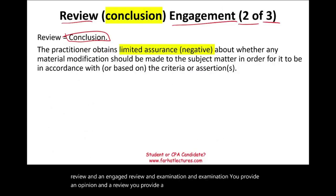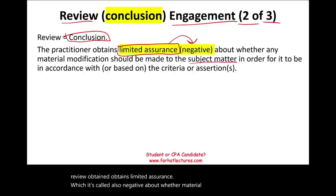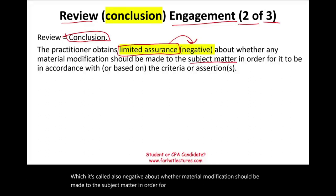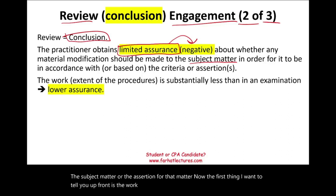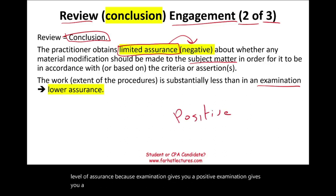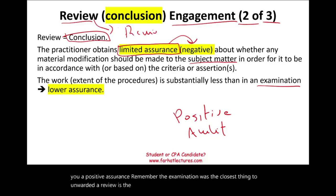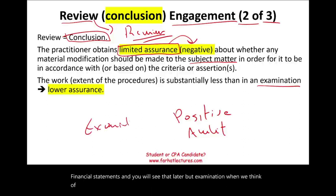The practitioner in a review obtains limited assurance — also called negative assurance — about whether material modification should be made to the subject matter in order for it to be in accordance with some criteria, whether for the subject matter or the assertion. The work is substantially less than an examination. Examination gives you positive assurance and was the closest thing to an audit.